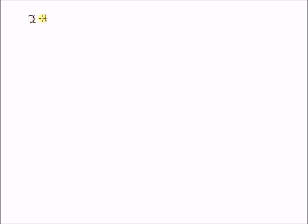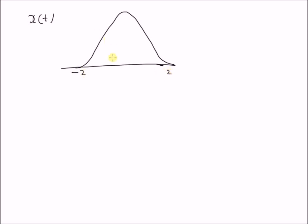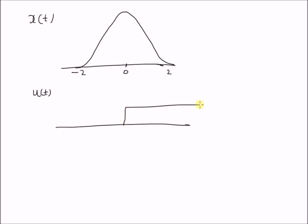Given the following original signals: x of t is given by a Gaussian signal that is non-zero between minus 2 and plus 2. So this is minus 2 and this is plus 2, and the peak is at 0. Next we have the unit step signal u of t, which is 1 for values of time t greater than 0.